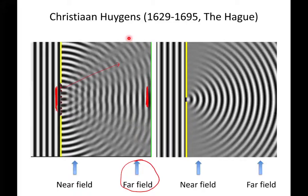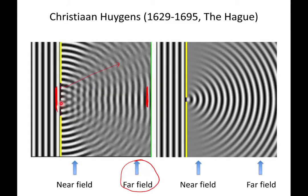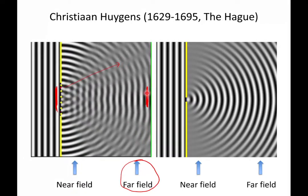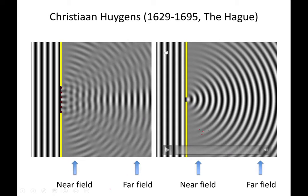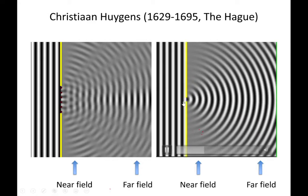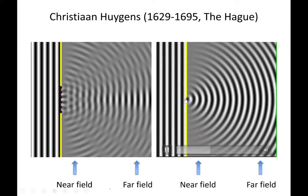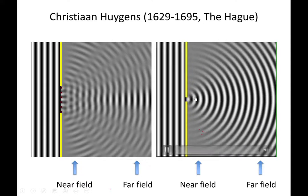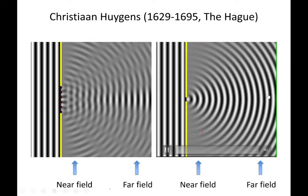In these extreme directions, the field distribution has nothing to do with the field distribution inside the aperture. On the right-hand side, the aperture is very small, and the far field pattern looks very different — it has no resemblance to the plane wave character. In fact it turns into a spherical wave. If the aperture is sufficiently small, on the order of a wavelength of light, only a single secondary spherical wave gets through, and in the far field you end up with just a spherical wave.